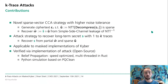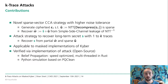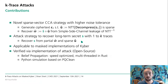This brings me to the contributions of this paper. We present a novel sparse chosen ciphertext attack strategy with higher noise tolerance. We first generate a ciphertext that is sparse in the NTT domain after decompression. We are able to recover the product of S and U — which I'll call W-hat — with a simple side-channel leakage of the inverse NTT. We also present an attack strategy to recover the long-term secret S with 1-to-K traces from partial knowledge of W-hat and a sparse support of W-hat. Our attack is applicable to masked implementations of Kyber, and we verified it via an open-source implementation with a belief propagation written in Rust, speed-optimized and multi-threaded, plus a Python simulation for leakages.